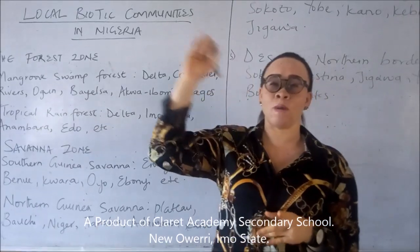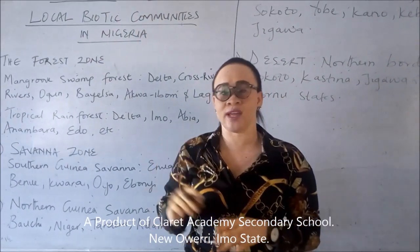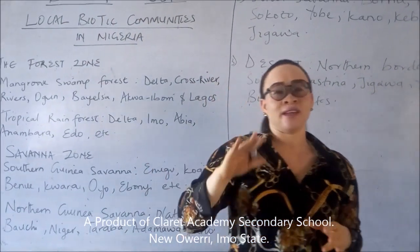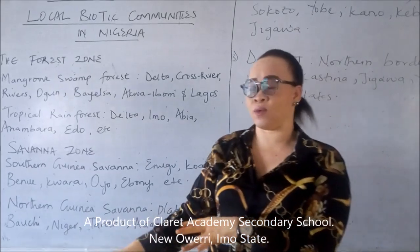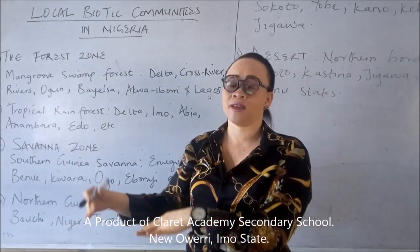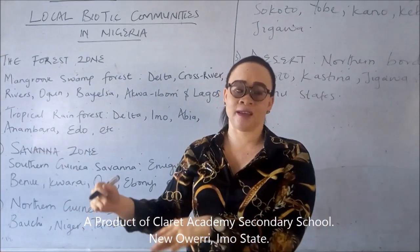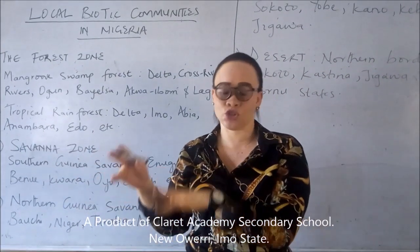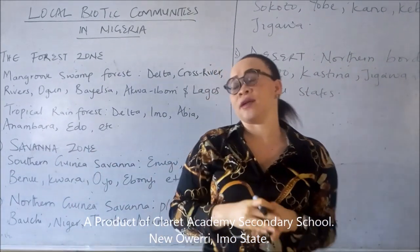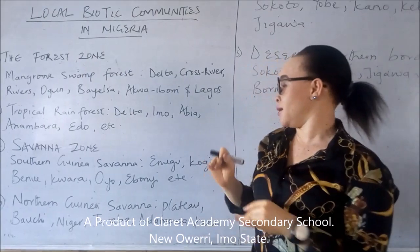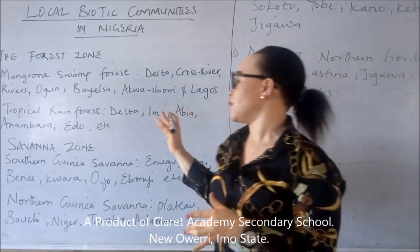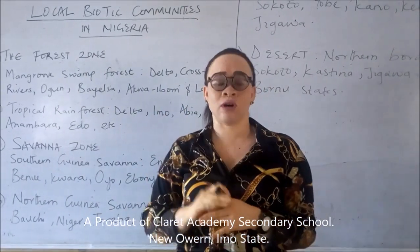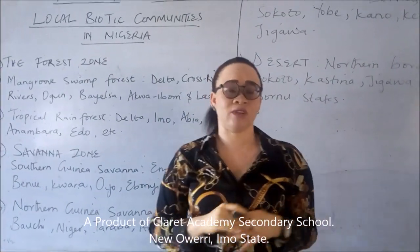You have the upper layer, you have the middle layer, and you have the lower layer which has grasses, herbs, and shrubs. Now the savannah region, or the savannah zone,